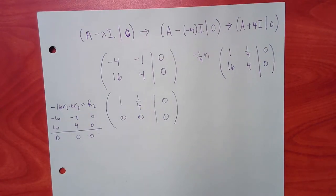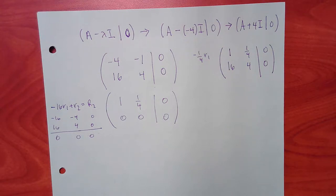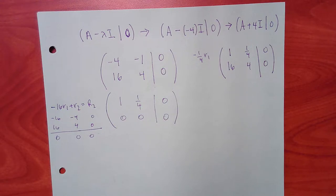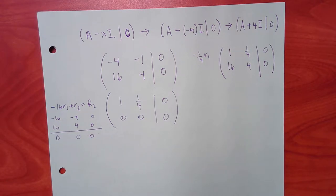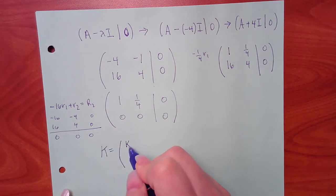Getting all zeros at the bottom means infinitely many solutions — zero always equals zero. But these solutions must fit a certain relationship. To pick the vector matching the back of the book, convert to little k variables: capital K consists of k1 and k2.